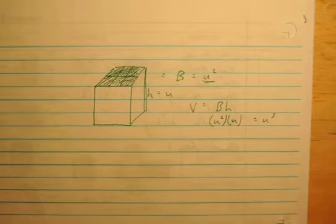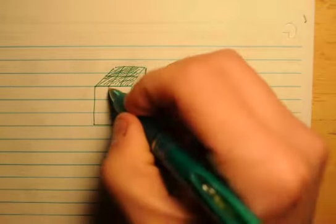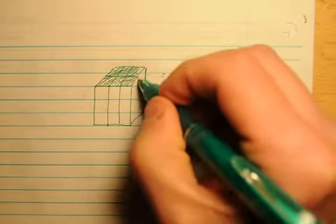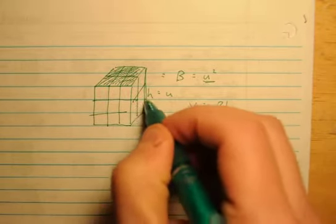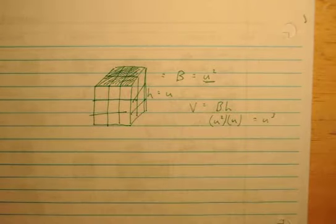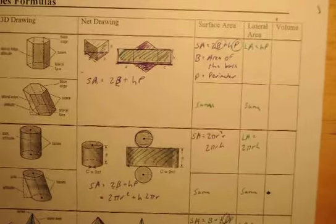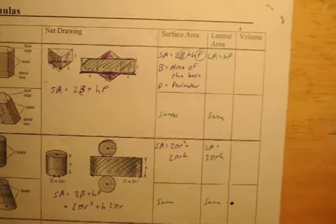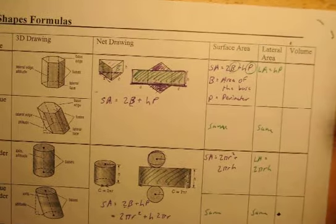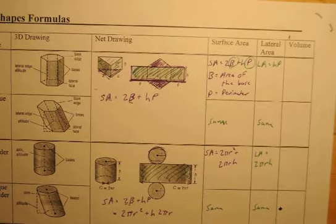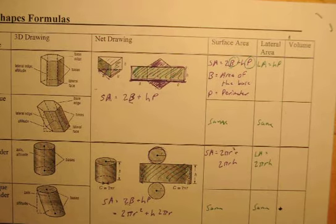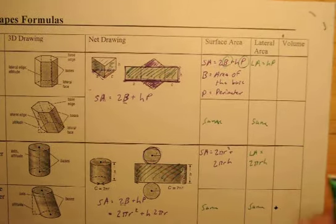Now, base is unit squared. Area is always unit squared. Height is just units. So what do you get when you take units squared times units? You get units cubed. Volume is always measured in cubes. It's like how many little cubes would I have to fit inside of here to make the figure? How many little cubes? Cubic units. All right. So let's continue.